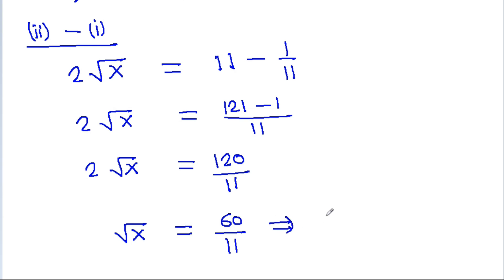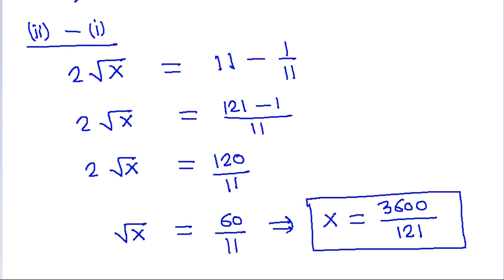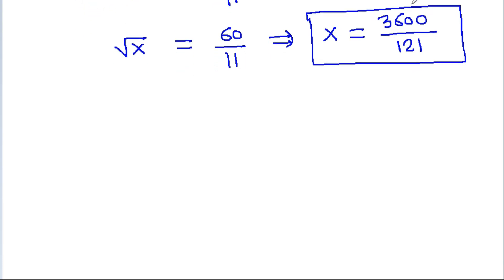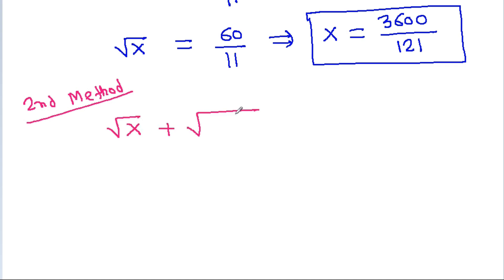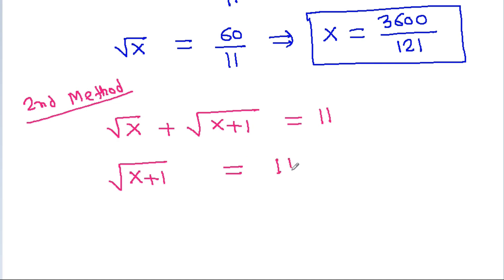And x will be 3600 divided by 121, since 11 squared is 121. For the second method, we have a square root of x plus a square root of x plus 1 is equal to 11, so a square root of x plus 1 will be equal to 11 minus a square root of x.